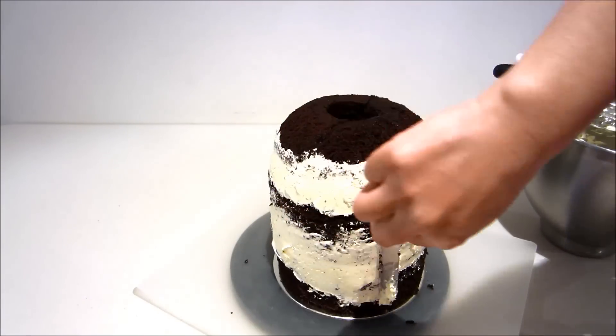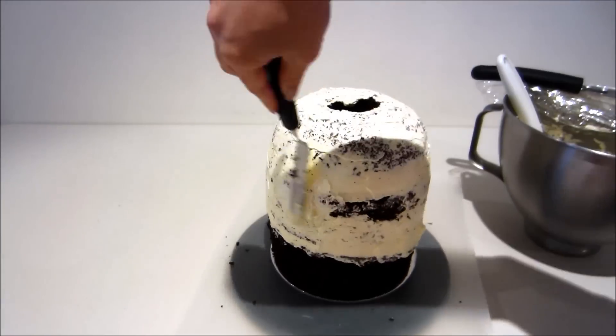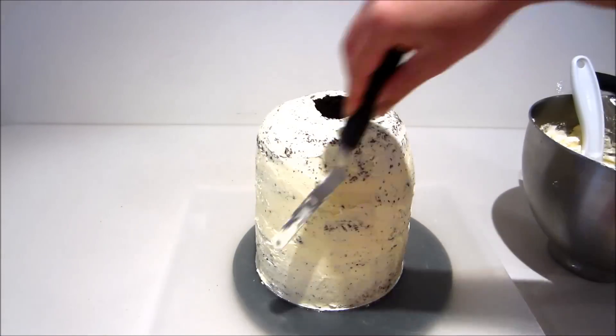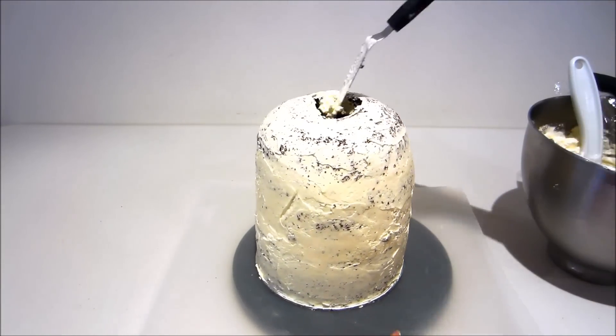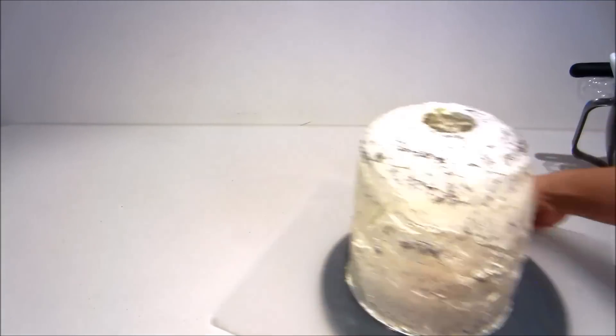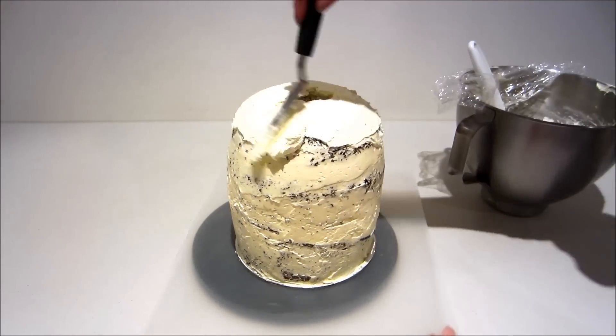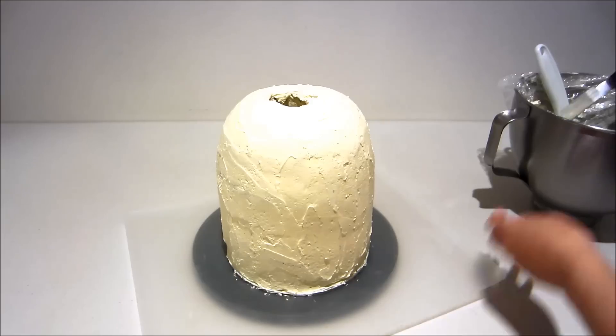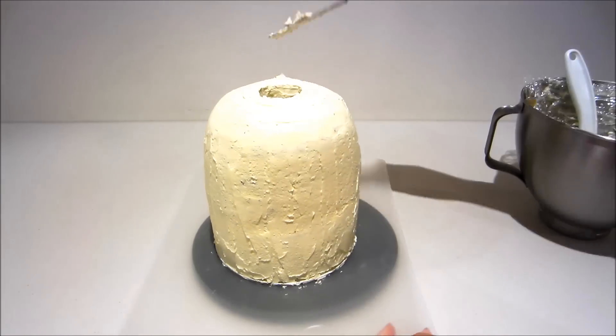Now I'm just filling in the gaps with the buttercream and giving the cake a crumb coat. Once it's crumb coated I'm going to place it in the fridge to set for at least half an hour before I take it out and give it a second coat of buttercream. Then it goes in the fridge for at least another half an hour before decorating.